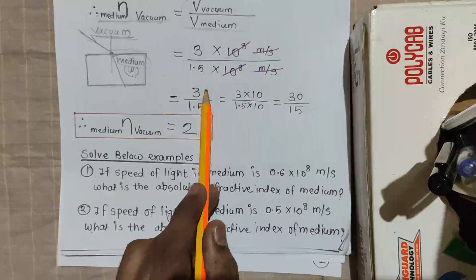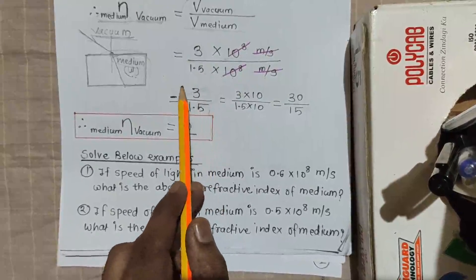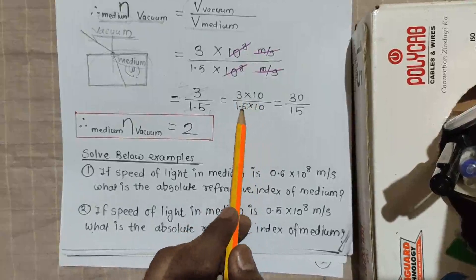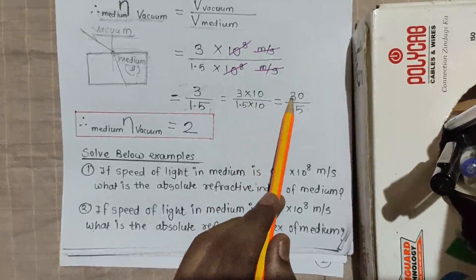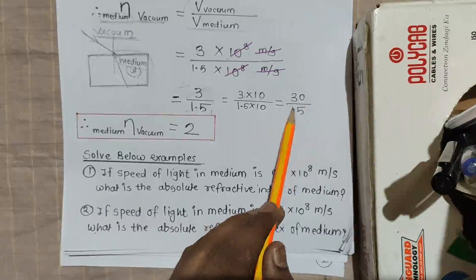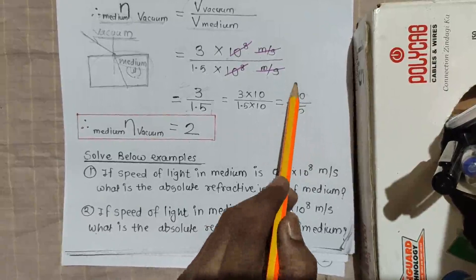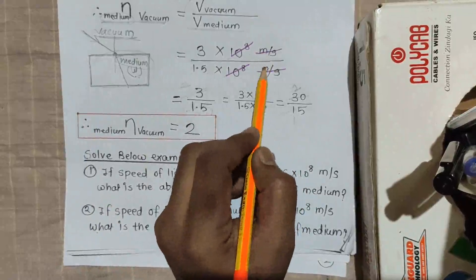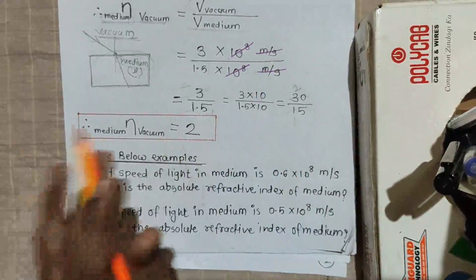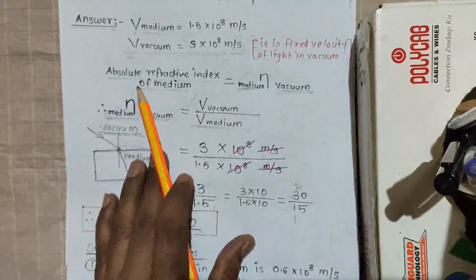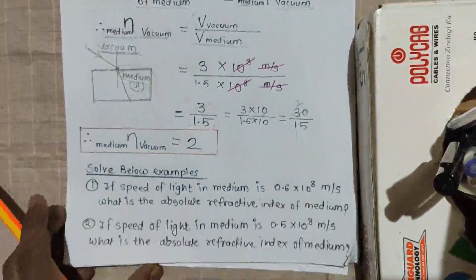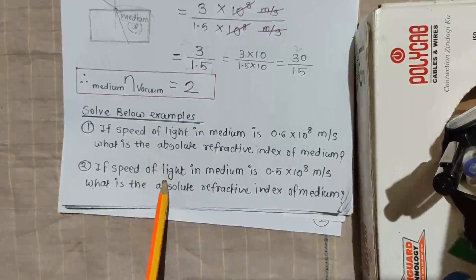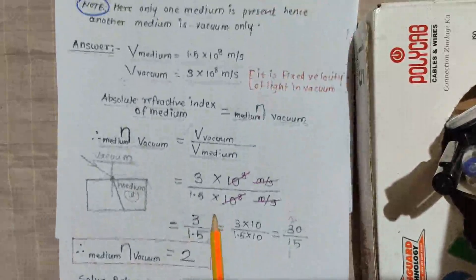3 divided by 1.5 can be simplified: multiplying both by 10 gives 30 divided by 15, which equals 2. So the absolute refractive index of the medium is 2. Since all units cancel, the absolute refractive index has no unit. You can also refer to the similar examples provided and solve them as practice.